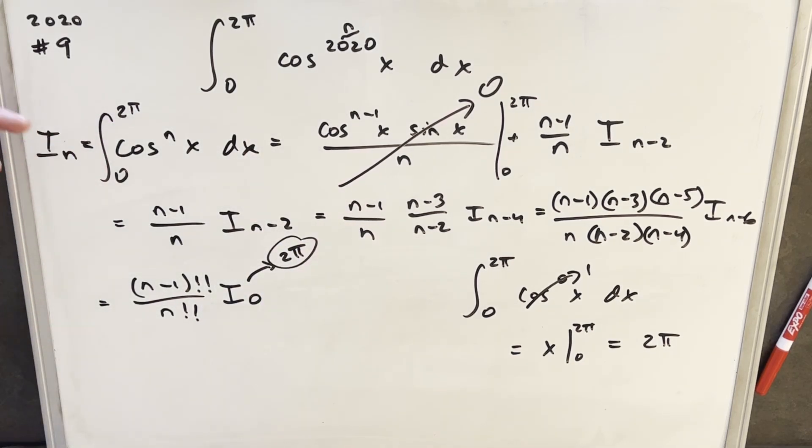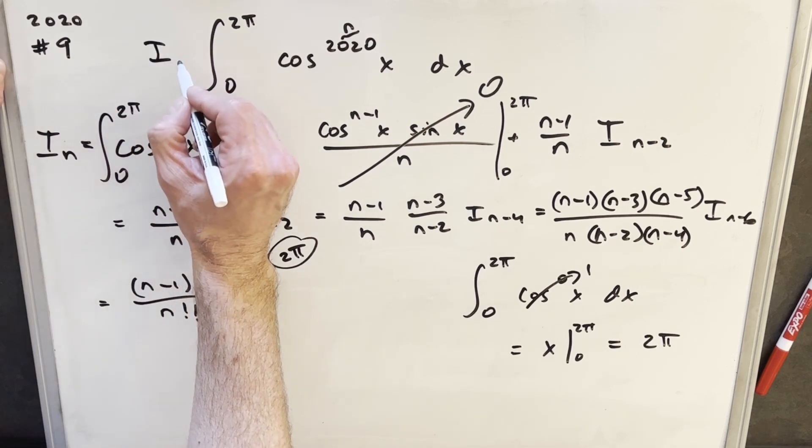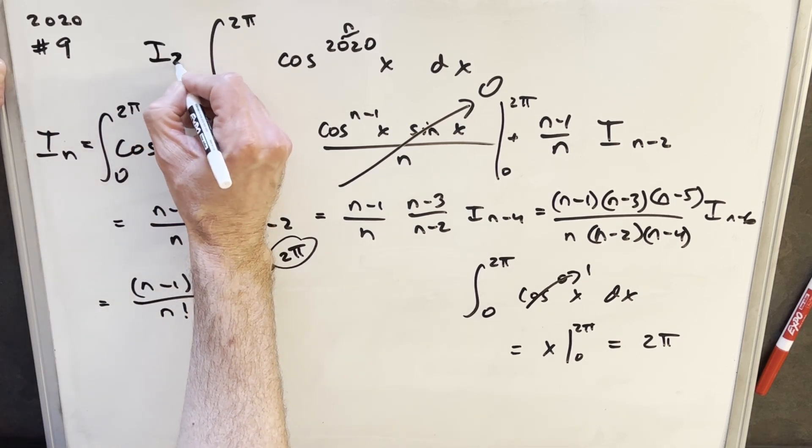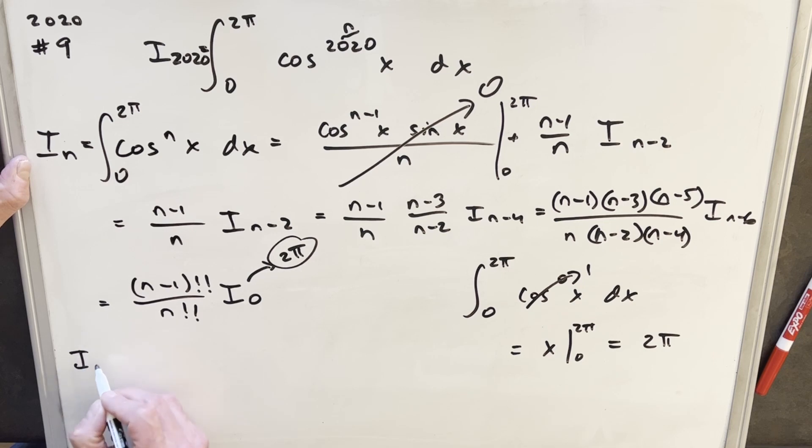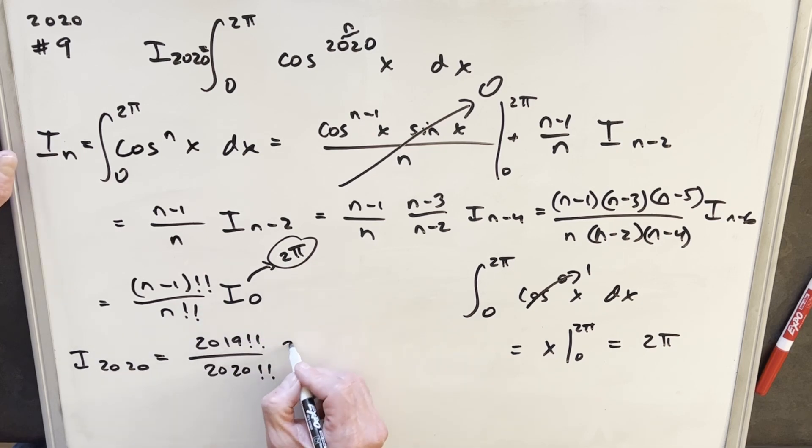Okay, and I think now this is where we can go back to our integral. This integral is just going to be i sub 2020. And so using this formula to figure out what i sub 2020 is going to be, we have n is 2020, so we're going to have 2019 double factorial over 2020 double factorial, and our i sub 0 is going to be 2 pi.